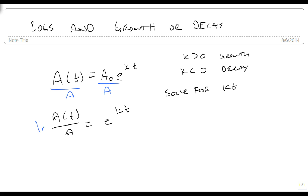and just like before, we're just going to take the natural log of both sides. So the natural log of the amount divided by what we started with is going to be equal to kt